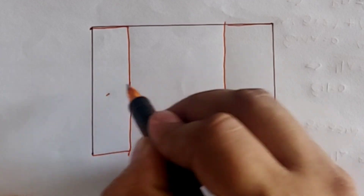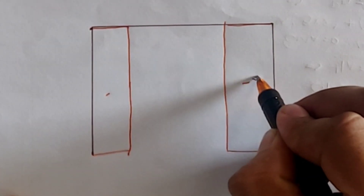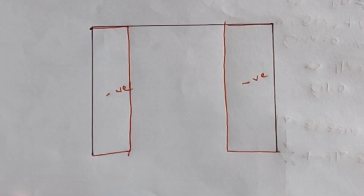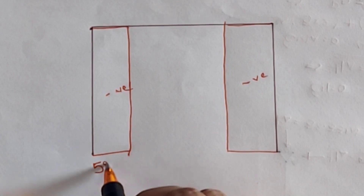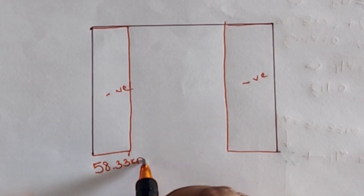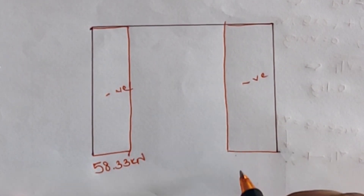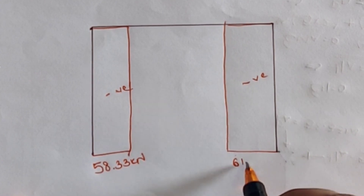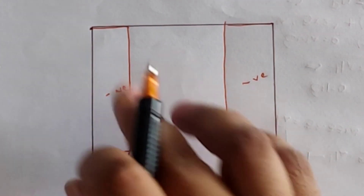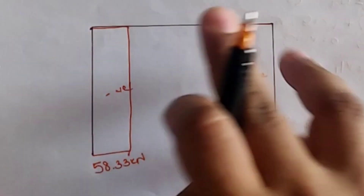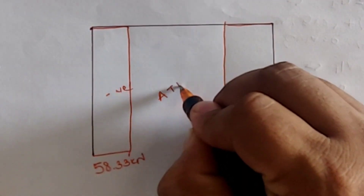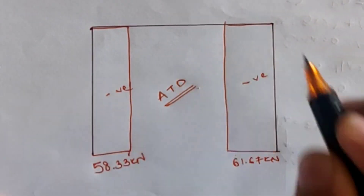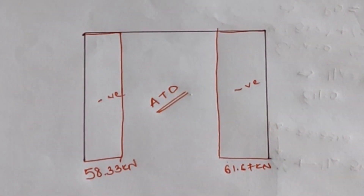The values are negative due to compression. For member AB the axial thrust is 58.33 kilo Newton, for member CD it is 61.67 kilo Newton, and for member BC the axial thrust diagram is zero. This completes the axial thrust diagram for the given frame.